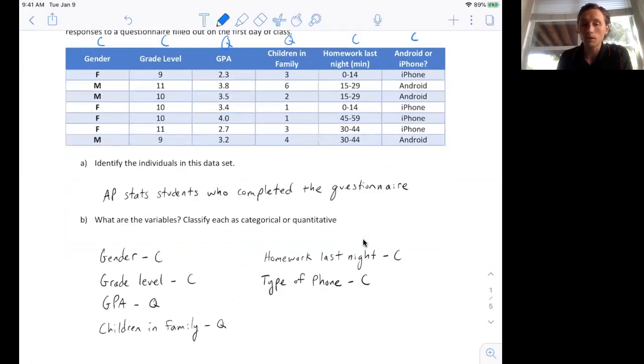A phone number, a social security number, neither of those would be quantitative, even though they're numbers. Those would be categorical because it doesn't make sense to take the average.